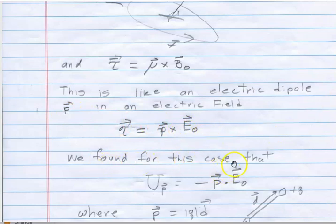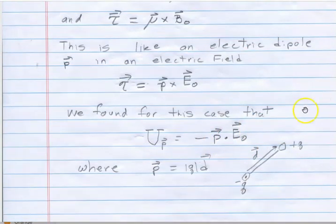And in that case, we found pretty easily that the potential energy of this electric dipole was minus P dot E-naught, where the dot is the scalar product between those two. I remember there was a little bit of difference in that this P vector, the electric dipole moment, was the magnitude of the separated charge.